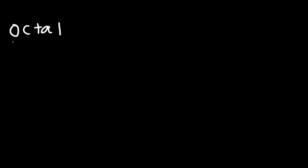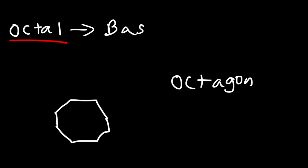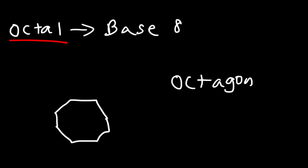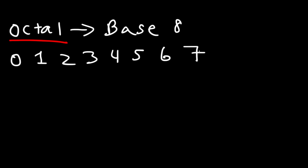Next we have the octal system. When you hear the word octal or octa, think of an octagon — a polygon with eight sides. So octa means eight, and the octal number system is a base eight system. There are eight numbers: zero, one, two, three, four, five, six, seven — a total of eight numbers including zero.